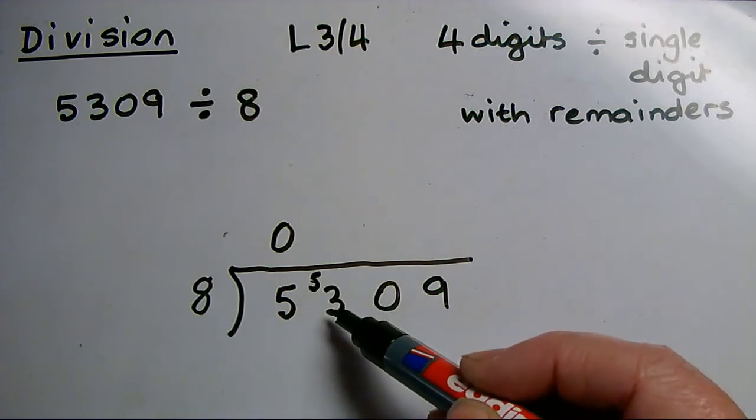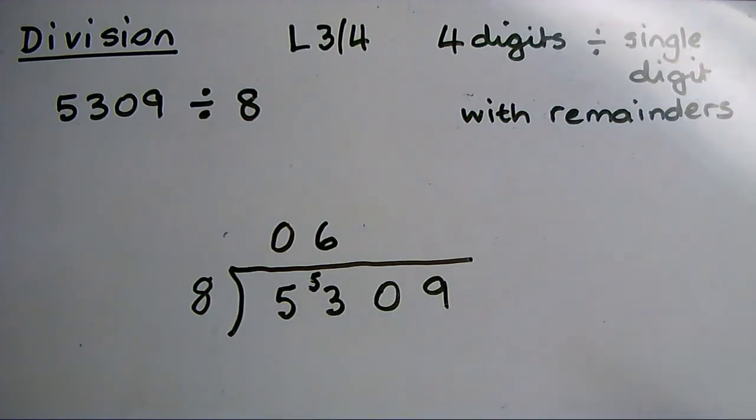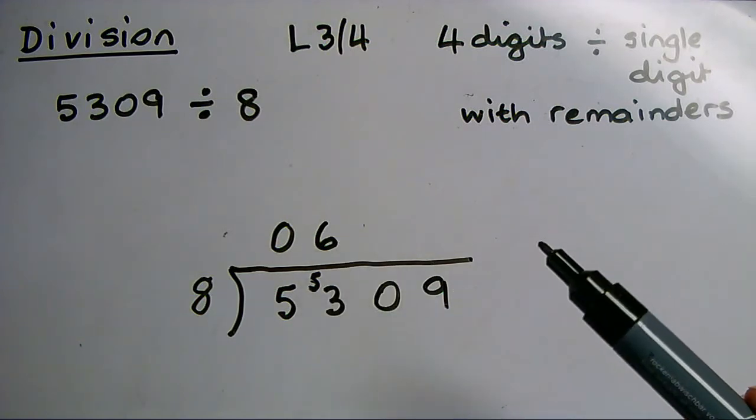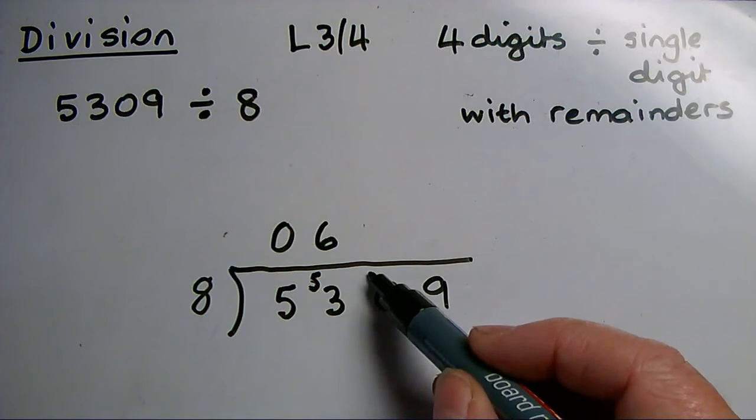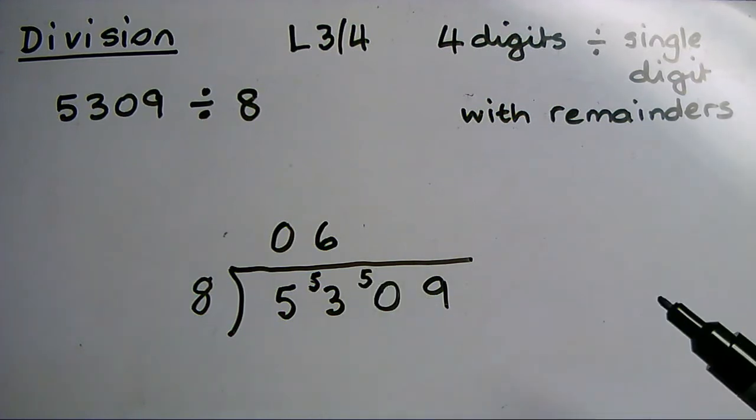I use my times tables to work out that 6 8s are 48. 7 8s would be 56, which is too many. So 6 8s are 48. Then what remainder have I got left? 48, 49, 50, 51, 52, 53. I've got remainder 5. So I'll put the remainder in front of that middle 0.